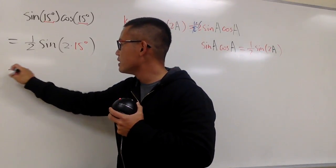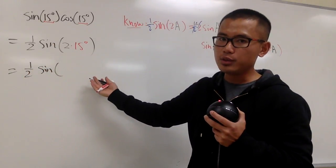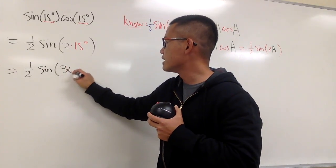And as we can see, this is just 1 half. And then we have the sine. And then 2 times 15 degrees, of course, that will be just 30 degrees.